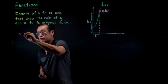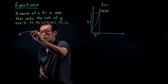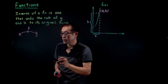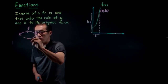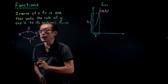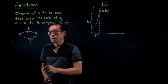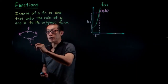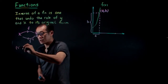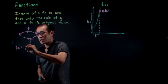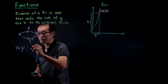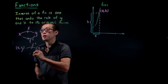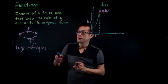Using an arrow diagram: the domain of F is X, the function F outputs image Y, and then applying F inverse brings Y back to X. So if your original point is (X, Y) on F, then when you apply F inverse, it becomes the point (Y, X) by definition of the inverse function.